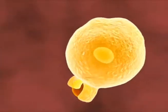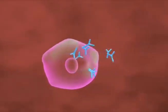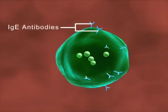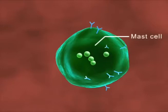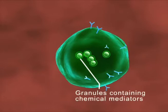These T-cells activate the B-cells to release substances called IgE antibodies against the allergen. These IgE antibodies sit on the surface of the mast cells. The mast cells have granules containing chemical mediators like histamine and prostaglandins.